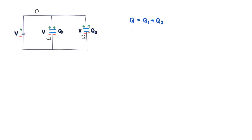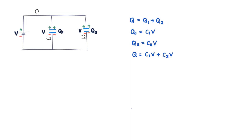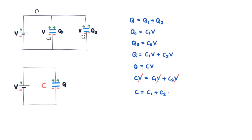Where the potential difference across each capacitor is V, the equations we write are Q1 = C1·V and Q2 = C2·V. Since Q = Q1 + Q2, we get Q = C1·V + C2·V. If we replace the setup with an equivalent capacitor C across the same battery, it also has potential difference V and charge Q, so C = C1 + C2. Extending the same logic, if there are N capacitors in parallel, the equivalent capacitance is C = C1 + C2 + C3 + ... + Cn.